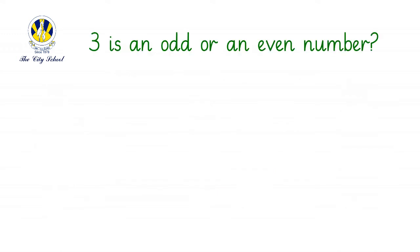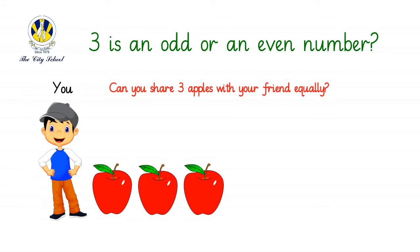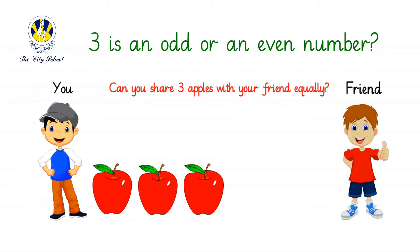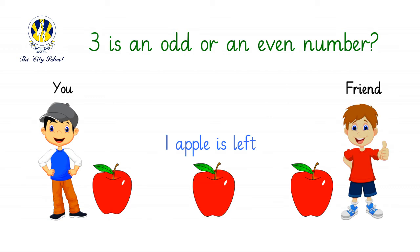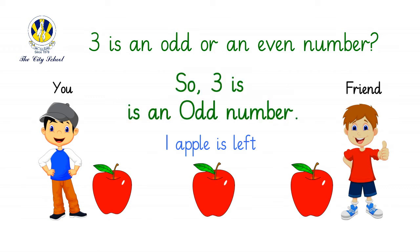Let's see if three is an odd or an even number. Can you share three apples with your friend equally? Let's try. Oh no, you can't — one apple is left. So three is an odd number, or three apples are an odd number of apples.